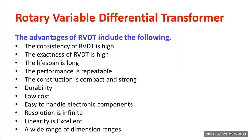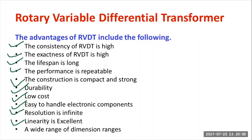The major advantages of RVDT are: the consistency and accuracy are very high; it is durable and the performance is repeatable; it can perform a large number of operations; the construction is compact and strong; the cost is reasonable; it is easy to handle electronic components; the resolution is infinite; and the linearity is excellent over a wide range of dimensions.